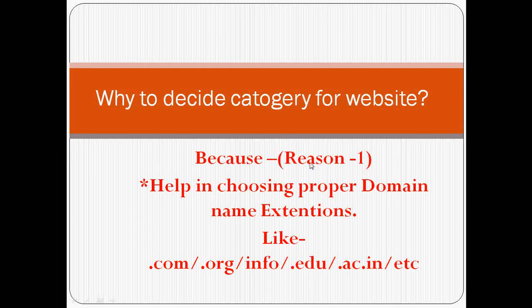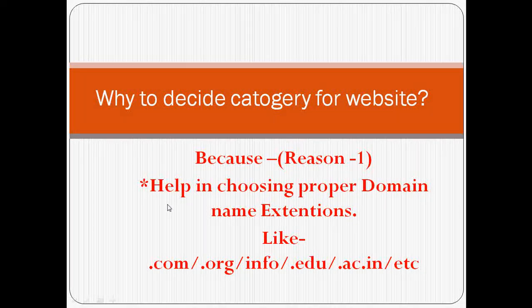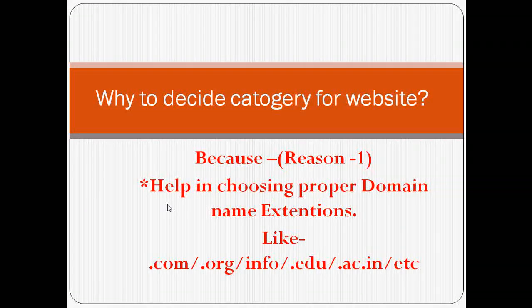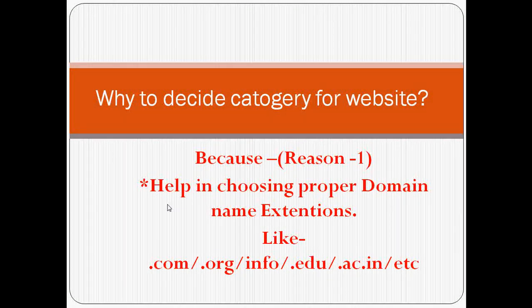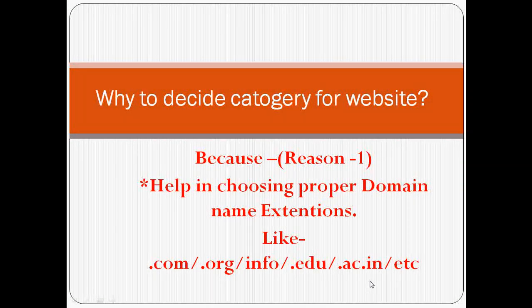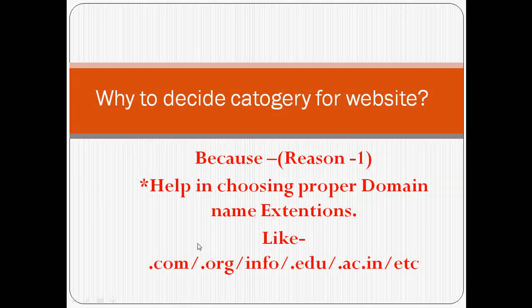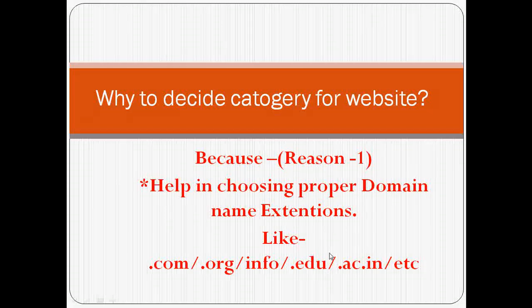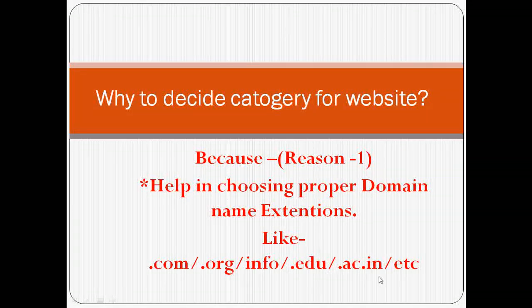The first reason why this matters: if you have already decided that you are going to create a website for a school or college, it will help you in choosing the proper domain name extension — like .com, .org, .info, .edu, .ac.in, and many others. If you are not clear on your website concept, it is difficult to decide which extension to choose.